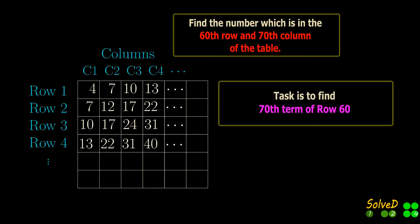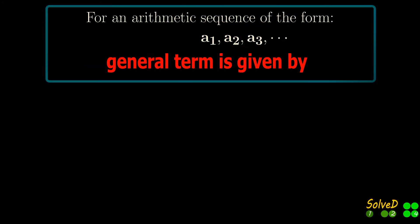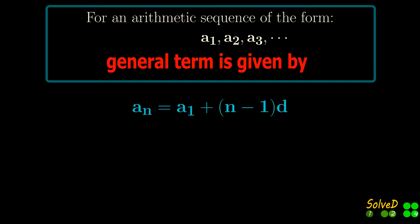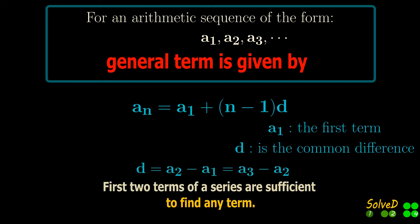So we need to find the 70th term of row 60. Use this equation to find a general term of an arithmetic sequence. So we need the first two terms of a series in order to find any general term.